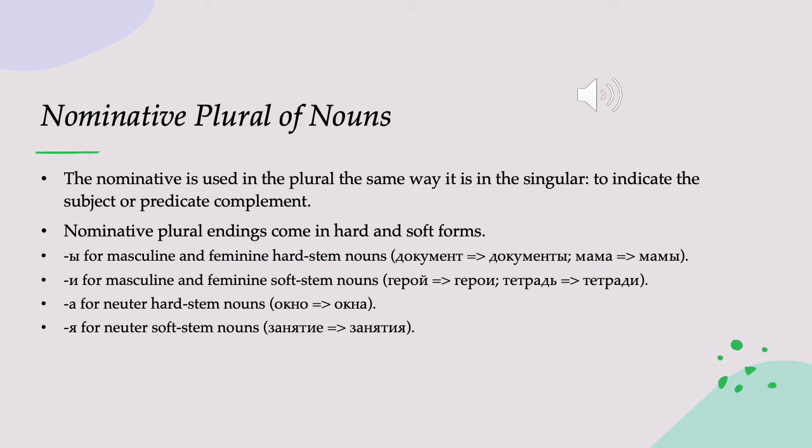The soft equivalent of Ы is И, and so we use that for masculine and feminine soft stem nouns. So geroi, a hero, becomes geroi with that soft И. Tetrad, a notebook, becomes tetradi with that soft И. Note that we drop the Ь, or the Й, or the Я at the end of the noun and replace it with И.